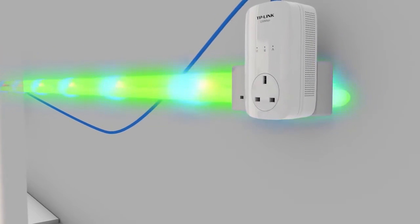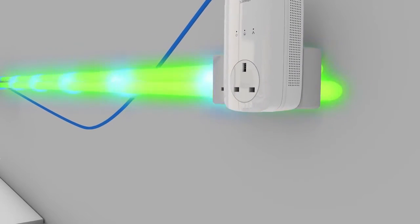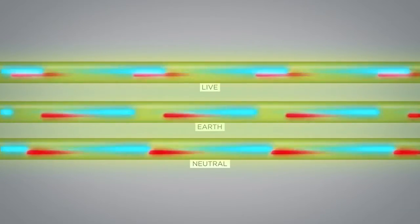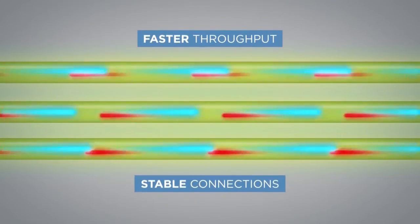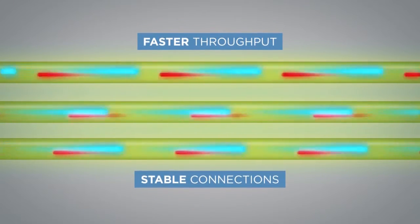It also comes with MIMO capabilities with beamforming. Previously, powerline adapters could only utilize two wires. However, this device uses all three to create multiple data paths. Thus, you benefit from faster data throughput and more stable connections.